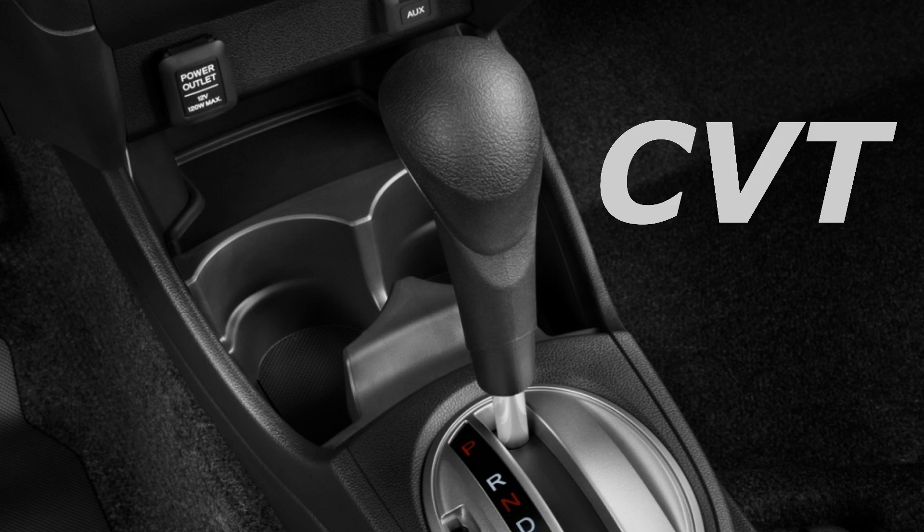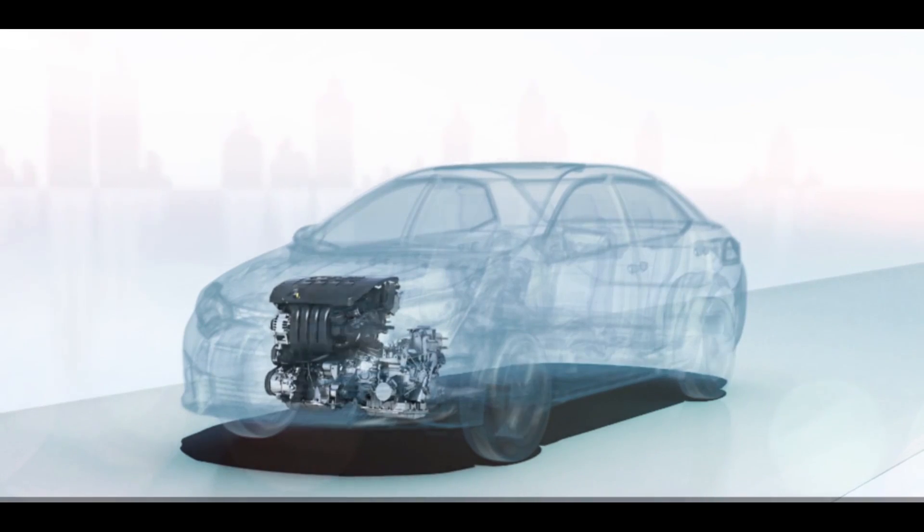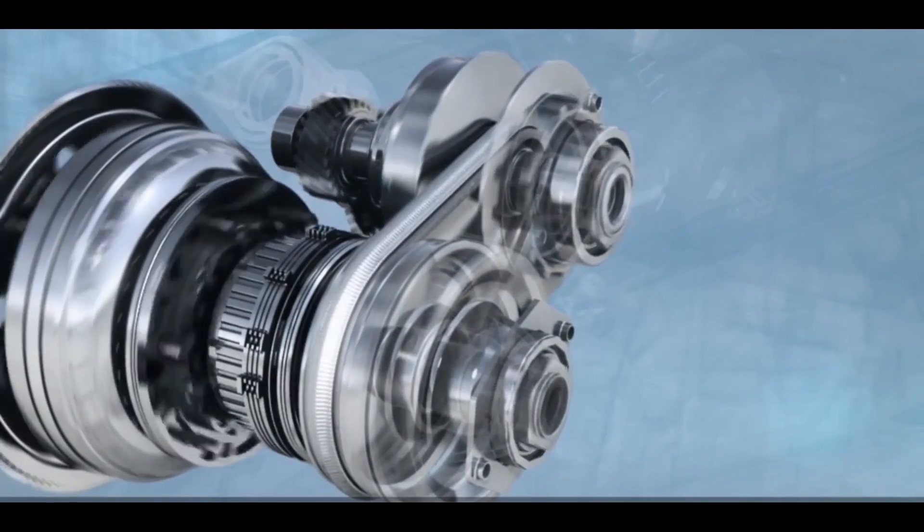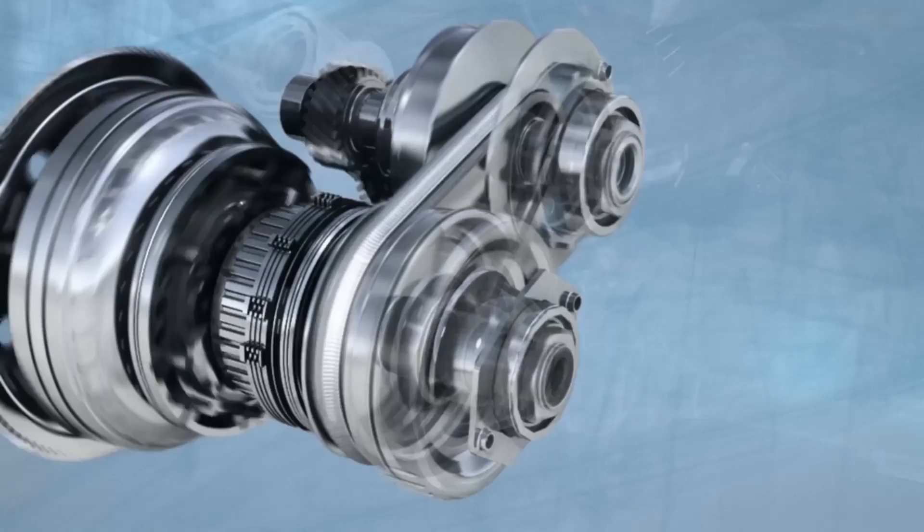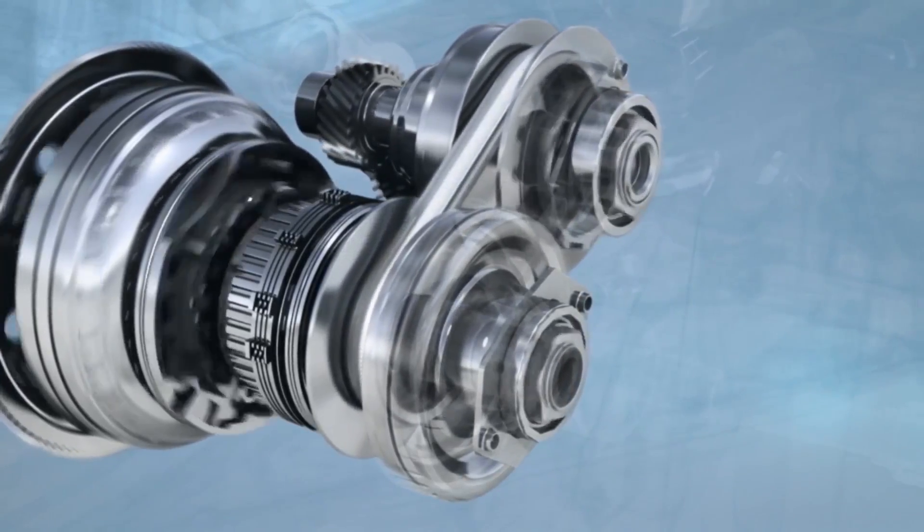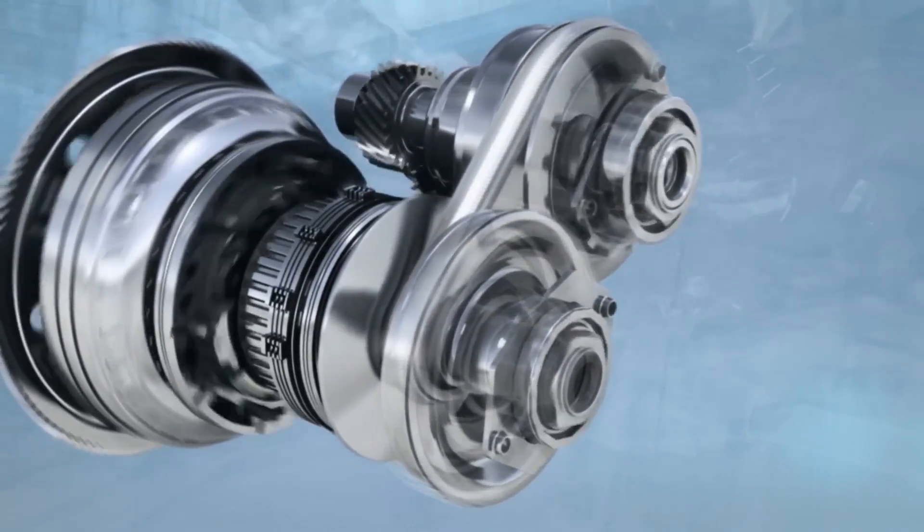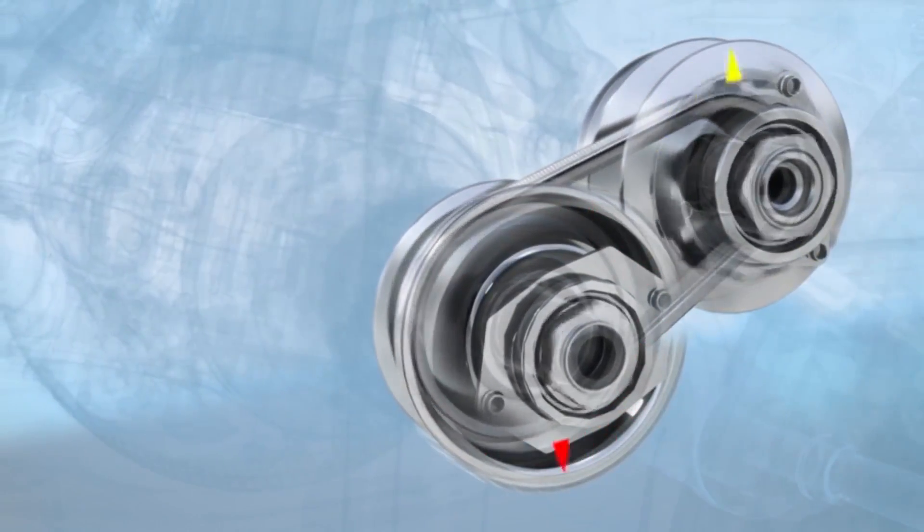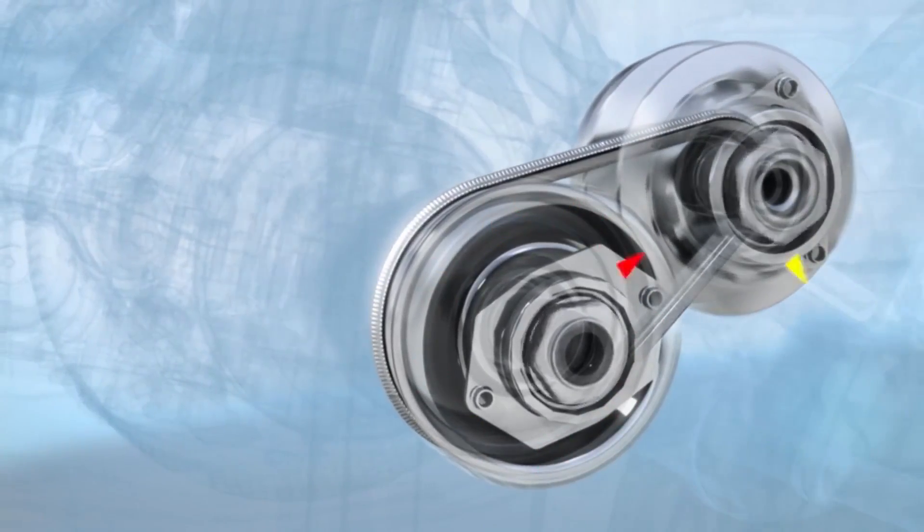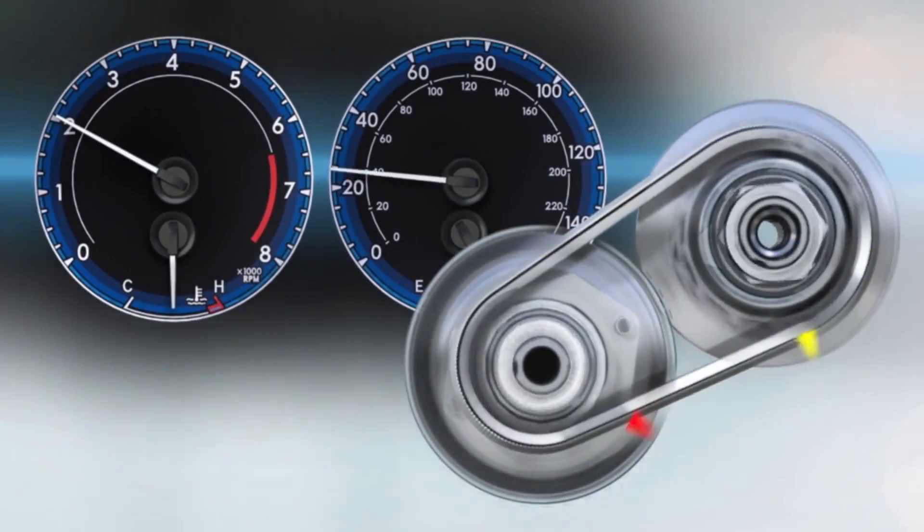Third one is CVT, which stands for continuously variable transmission. This is the simplest form of transmission. Unlike other transmissions, the CVT does not have gears. Instead, it has pulleys and belts through which the power is transmitted. CVT provides a smooth increase in power, but manufacturers usually limit it to have certain steps.